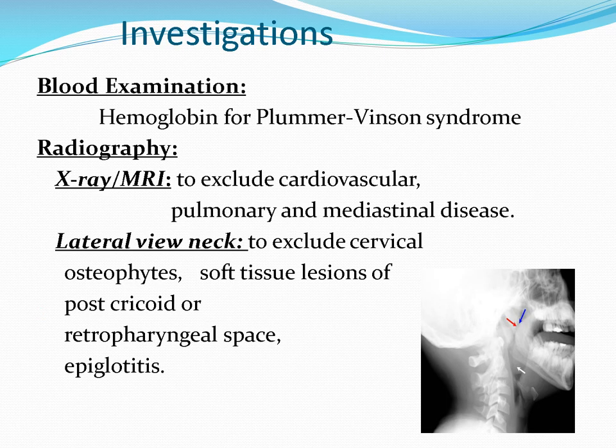We can see problems in the oral cavity, oropharynx, hypopharynx, and larynx through clinical examination, but if the problem is in the esophagus, we need investigations. Blood examination is advised to check the hemoglobin level, particularly for Plummer-Vinson syndrome.